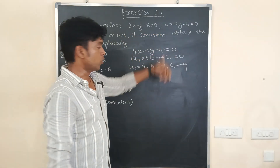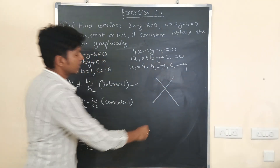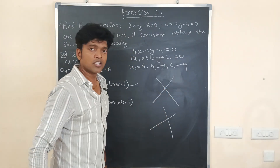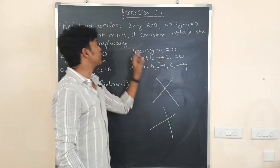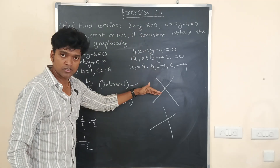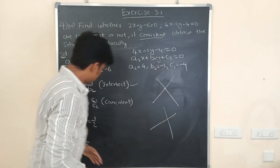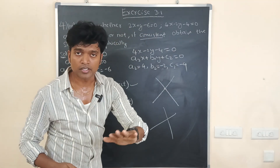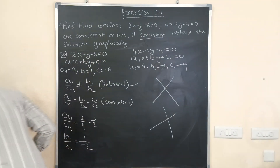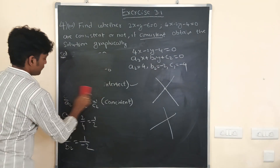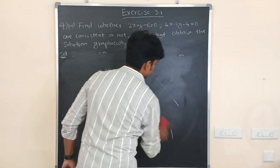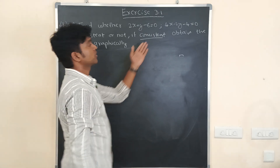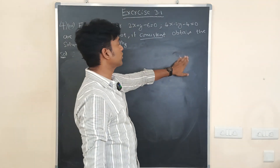Intersecting means the lines cross each other at a point, and that point of intersection will be the solution. We have proved these two lines are consistent by taking the condition, and they are intersecting lines. We have to find the point of intersection graphically. The first part of the problem is completed. Now the second part is to find the solution graphically, so we have to draw the graphs.